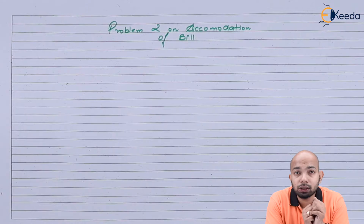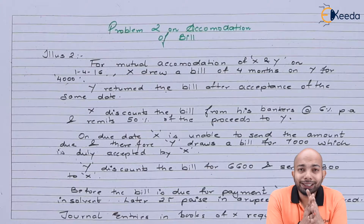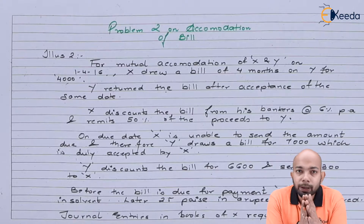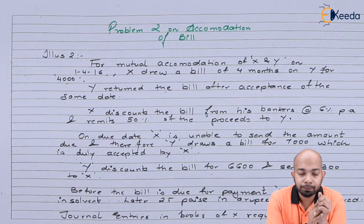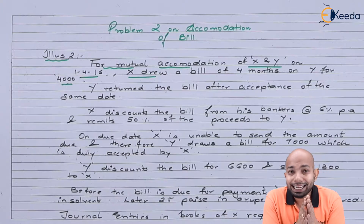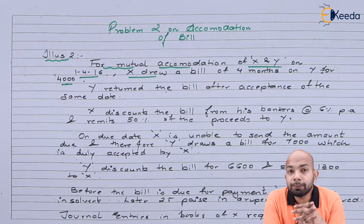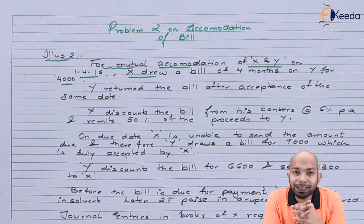Let's jot down the illustration first. We have mentioned the illustration here. Let's go through this illustration face by face as we did in the earlier sum. For mutual accommodation between X and Y,